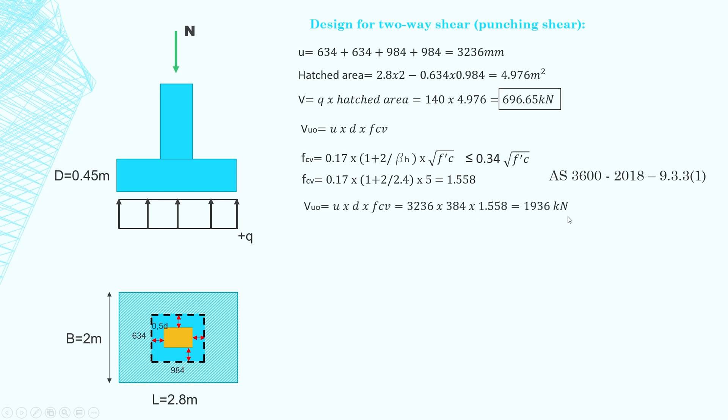However we cannot stop here because 1.936 meganewtons doesn't take into account bending moment so we go to clause 9.3.4 and we use the vu formula to find the reduction capacity of the concrete which works out to be 1.678 meganewtons and then we need to apply the reduction capacity factor phi which is 0.7 and then we find that phi vu is 1.175 meganewtons so phi vu is greater than 696.65 so we are good.